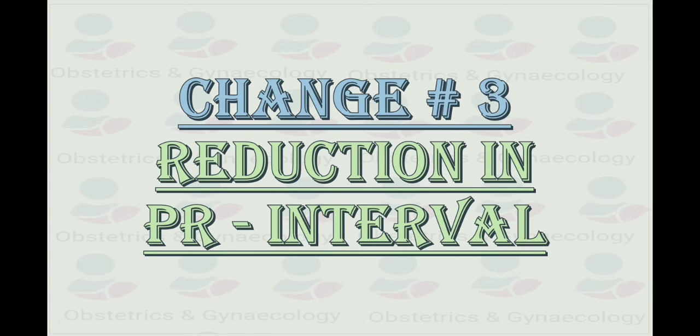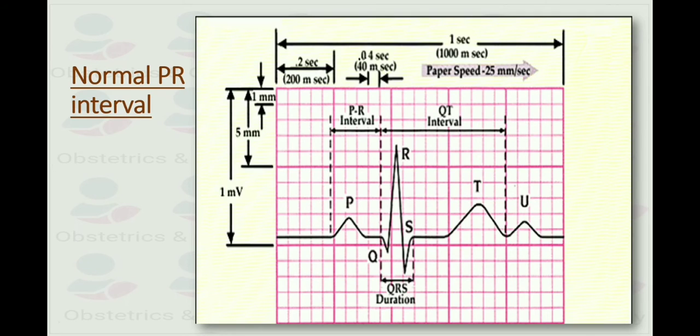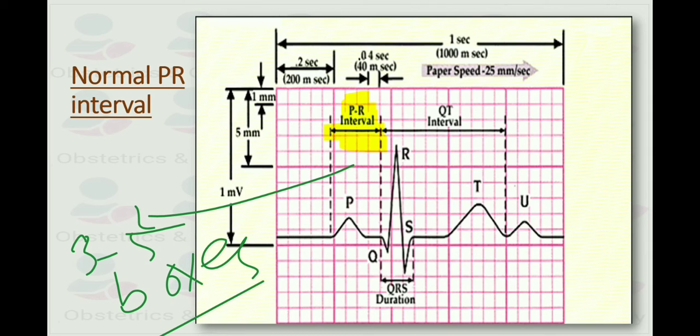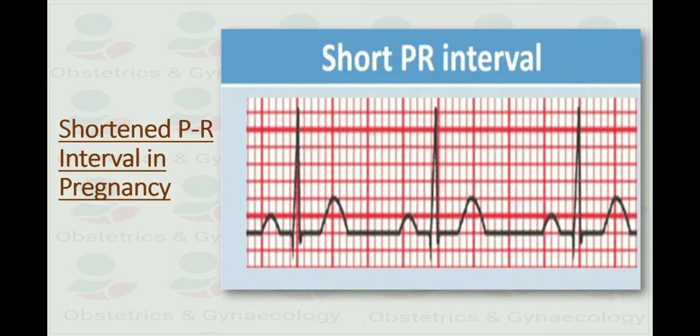Change number 3, reduction in the PR interval. The normal PR interval should be 0.12 to 0.2 seconds or 3 to 5 small squares in duration. Here you can see the normal PR interval, which covers 4 small boxes. Each small box is 0.04 second means 40 milliseconds. What happens in pregnancy, as you can see in this ECG, we have shortened PR interval. As here, it covers about 2 small boxes. So that is shortened.